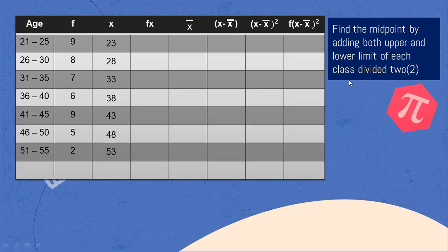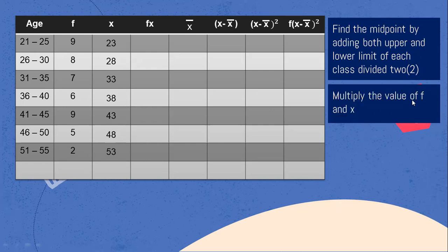Next step: multiply the value of F and X — that is, the frequency and the midpoint. 9 times 23 equals 207. 8 times 28 equals 224. 7 times 33 equals 231. 6 times 38 equals 228. 9 times 43 equals 387. 5 times 48 equals 240. 2 times 53 equals 106.